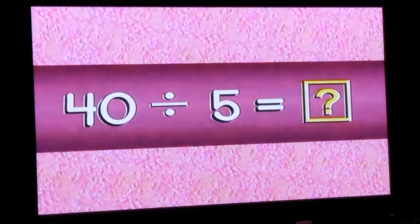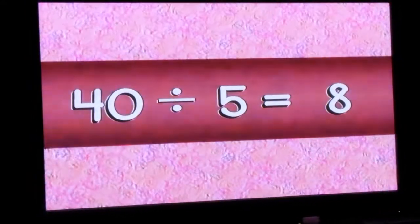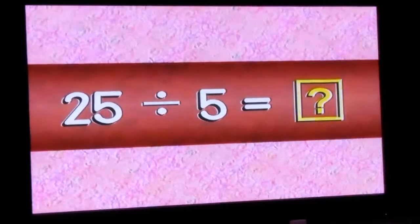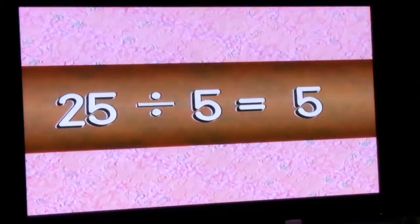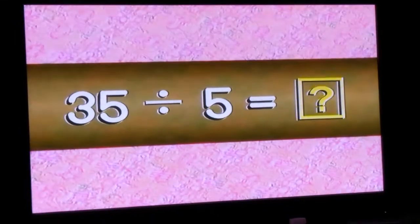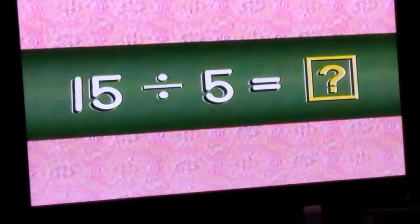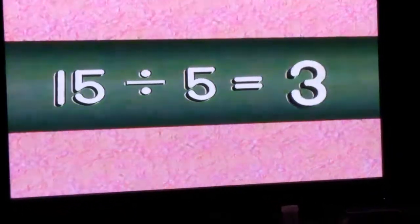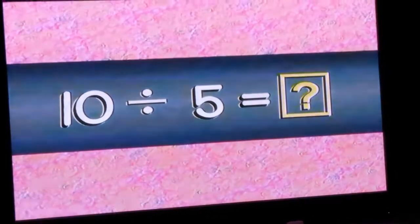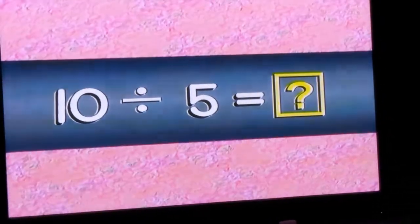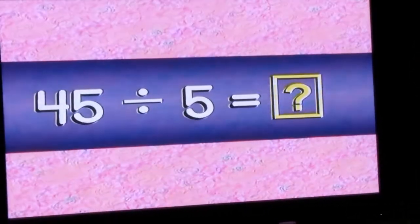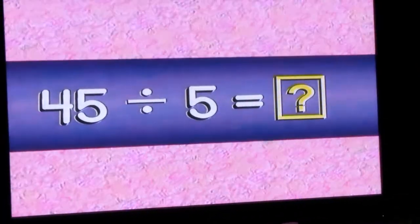30 divided by 5 is 6, 40 divided by 5 is 8, 25 divided by 5 is 5, 35 divided by 5 is 7, 15 divided by 5 is 3, 45 divided by 5 is 9, 20 divided by 5 is 4.